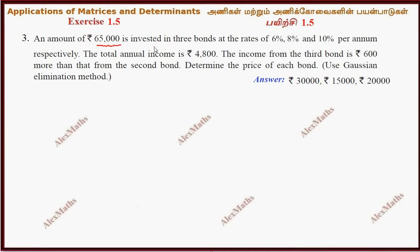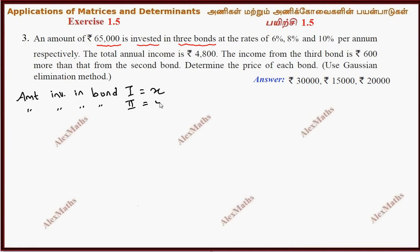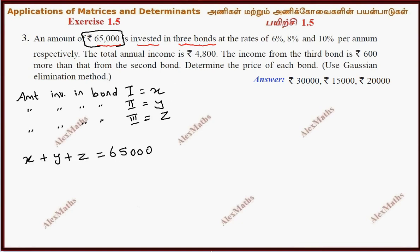An amount of 65,000 is invested in 3 bonds. So we have 3 bonds invested in x, y, z. Amount invested in bond 1 is x, amount invested in bond 2 is y, amount invested in bond 3 is z. Now 65,000 is invested in 3 bonds, so the first equation is x plus y plus z is equal to 65,000.